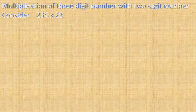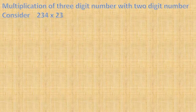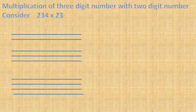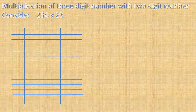First, we will revise our method discussed in the previous video. Consider the multiplication of 234 and 23. For that, for the first number we draw horizontal lines, and for the second number we draw vertical lines. For 234, we draw 2 lines, then leaving some space, 3 lines for the second digit and 4 lines for the third digit. Then for 23, we draw 2 vertical lines, then leaving some space, 3 vertical lines for the second digit. Now we shall count the points of intersection.